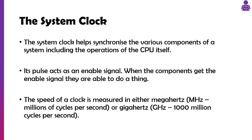The system clock allows all the components to work at the correct time. Every time there's a clock pulse, it tells the parts of the CPU they can do something — perform a job or action. The speed of the clock is measured in megahertz or gigahertz, which is either millions of cycles or a thousand million cycles per second.